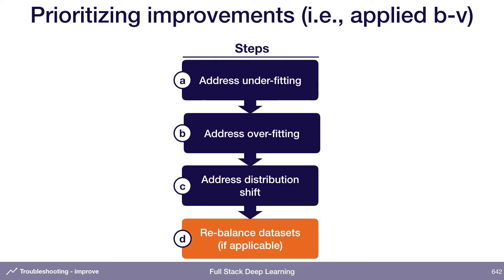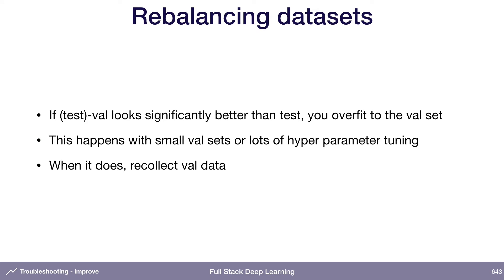There's one more step: if you need to rebalance your datasets. Periodically when training, you should check your error on your actual held-out test set. If your test validation error looks significantly better than your test error, that means you've overfit to your validation set — this can happen if you're doing a ton of hyperparameter tuning or have just been working with the same validation set for a long time. If it does happen, the recommendation is to resample your validation set — ideally collect new validation data, but even reshuffling the validation and test data a little can help.